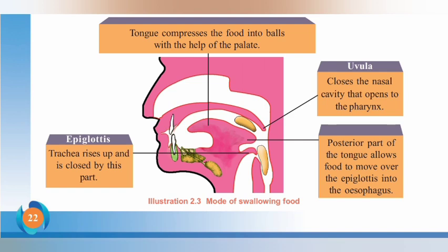The tongue compresses the food into balls with the help of the palate. Then the uvula closes the nasal cavity that opens to the pharynx. The trachea rises up and is closed by the epiglottis. Finally, the posterior part of the tongue allows the food to move into the esophagus.